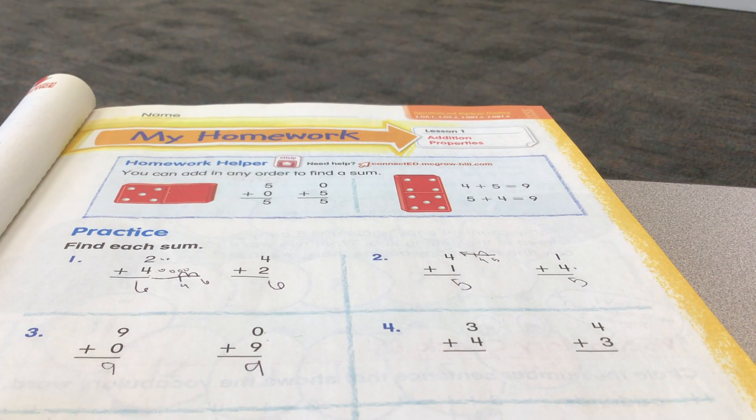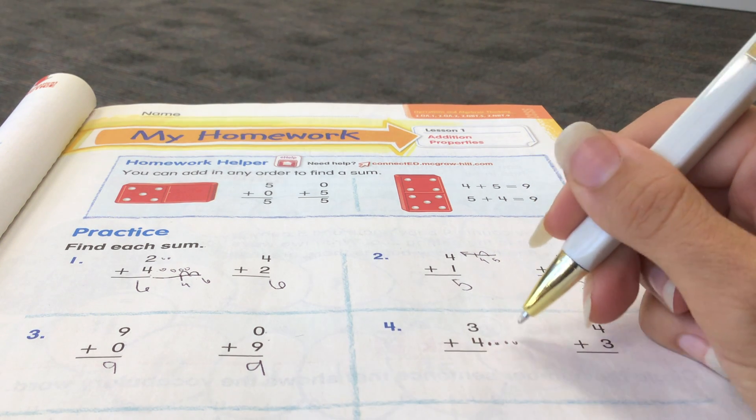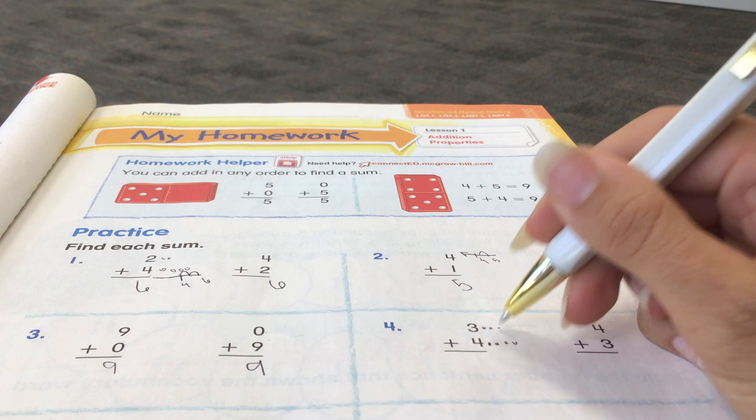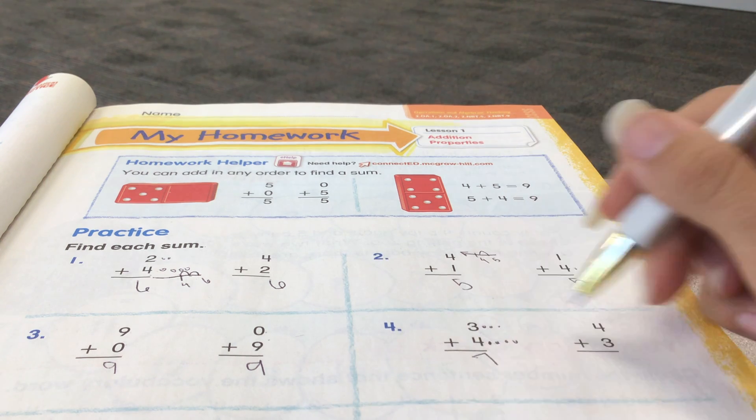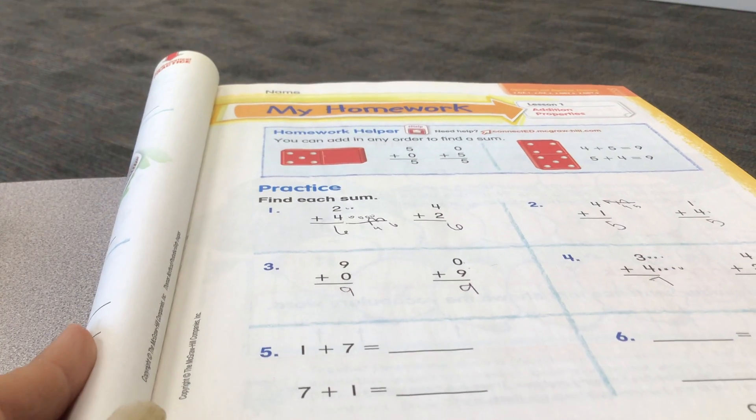3 plus 4, and 4 plus 3. Let's start with 4. 1, 2, 3, 4. Add 3 more, 5, 6, 7. So if you have this one, you know this one is also 7. When you know one, you know the other.